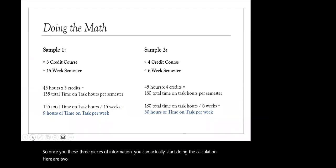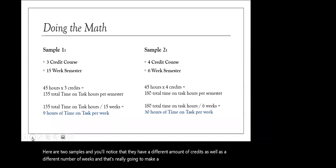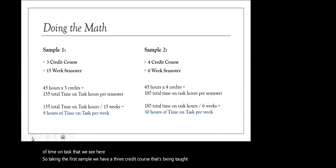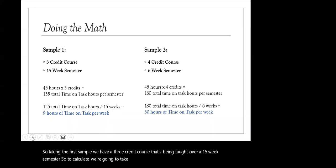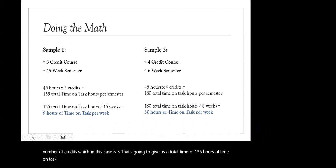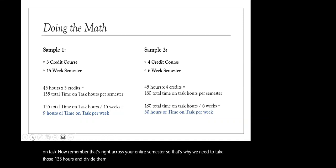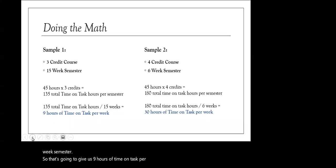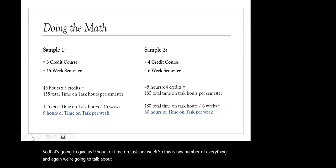Here are two samples with different credit amounts and number of weeks, which will make a huge difference in the distribution of time on task. Taking the first sample: a three-credit course taught over a 15-week semester. We take 45 hours of learning and multiply by three credits, giving us a total of 135 hours of time on task. We then divide those 135 hours by 15 weeks, which gives us nine hours of time on task per week. That's your raw number — the modality will change the breakdown.